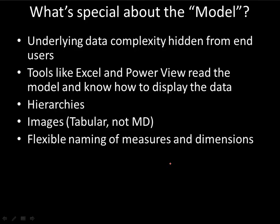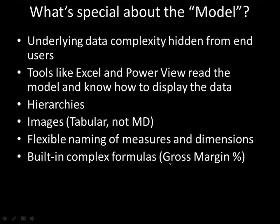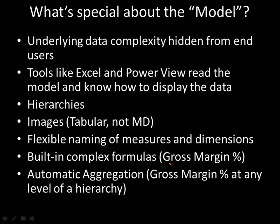Flexible naming of measures and dimensions also goes along with hiding data complexity — the model lets us rename things for users in ways that make more sense to them. Rather than having a six-character, seemingly random column name, we can give that column within the model a name like 'customer identifier.' We can also build complex formulas into the model. Gross margin isn't that complex a formula, but without some kind of model in a reporting and BI environment it gets implemented in end user applications over and over — and we hope it's implemented correctly every time. The model lets us take calculations like this and embed them right into the model, so all applications will see it consistently.